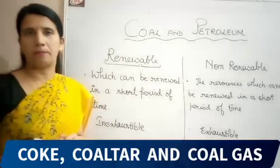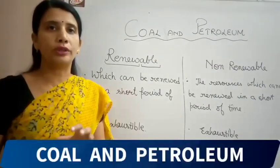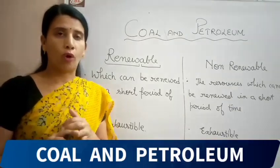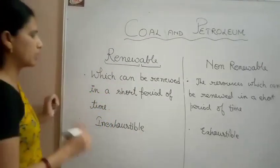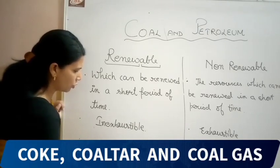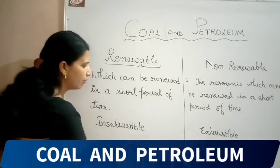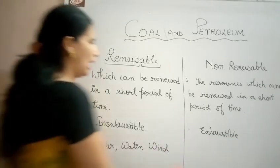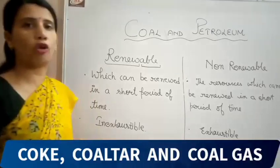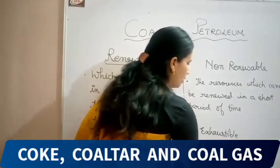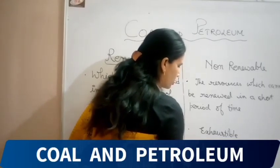Coming to examples — what are the examples of renewable resources? Solar energy can never end; water and wind are sources which can never end. So these all come under the category of renewable resources: solar, water, wind. Non-renewable resources are coal and petroleum, or collectively we can call them fossil fuels.